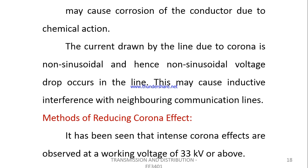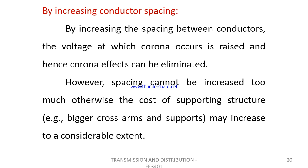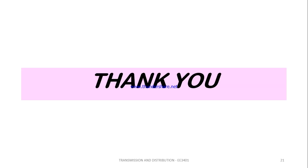These are some of the advantages and disadvantages of Corona. Regarding the methods of reducing the Corona effect: first, conductor size can be increased. This is one of the reasons that aluminium-steel combination conductors, which have larger cross-sectional areas, are used. The next method is increasing conductor spacing.